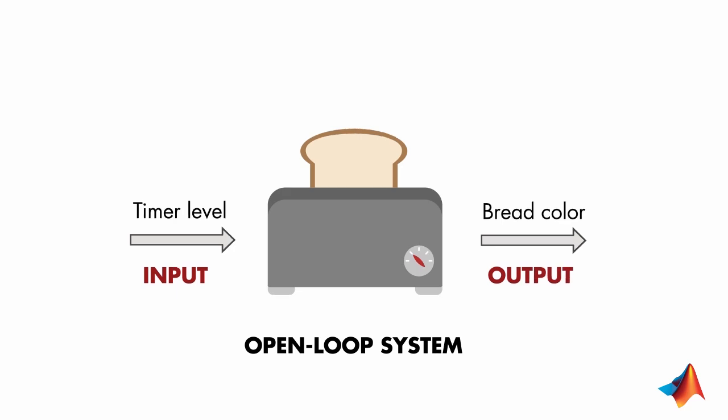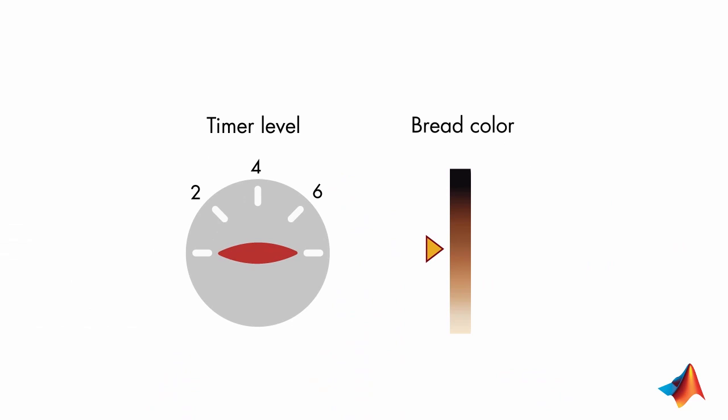Now, suppose that you're using the toaster for the first time. You don't know what setting the timer should be at to get your desired bread color.